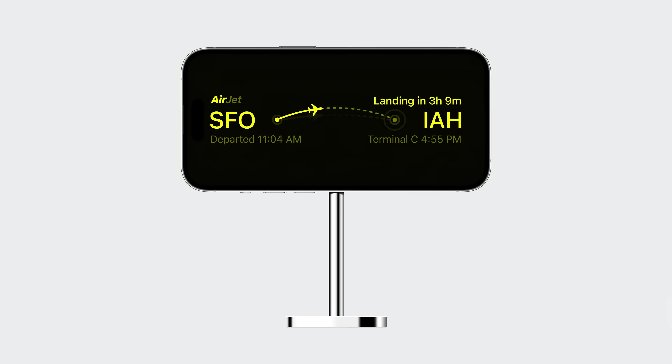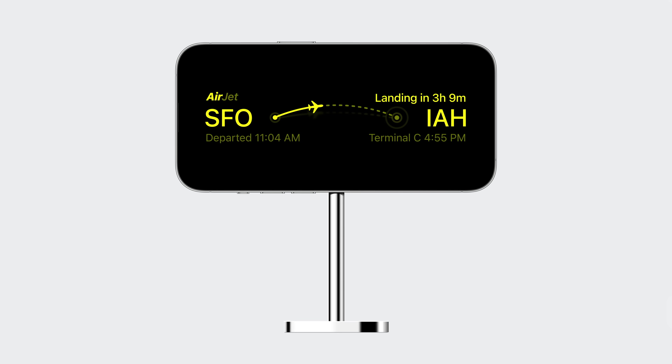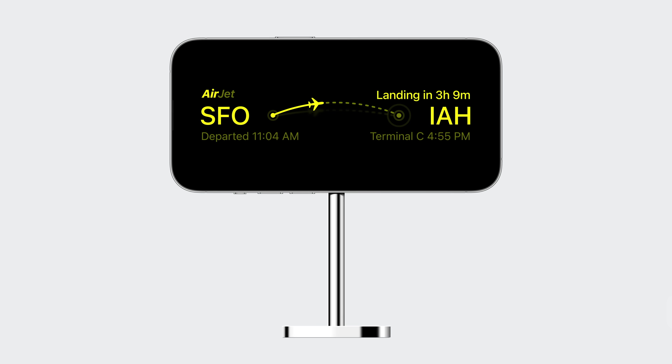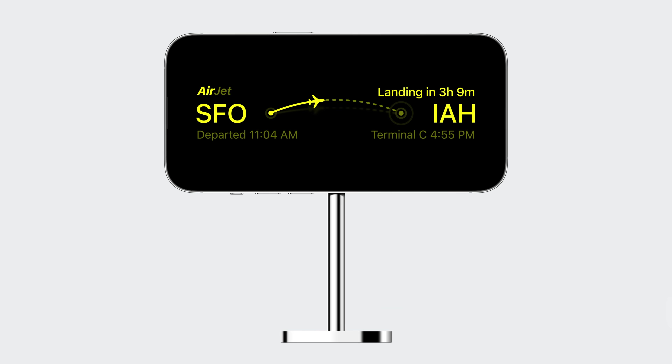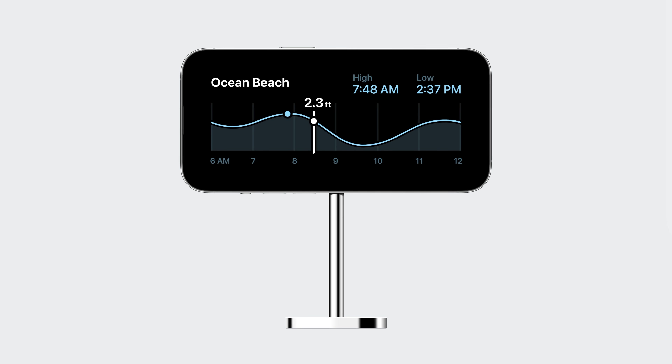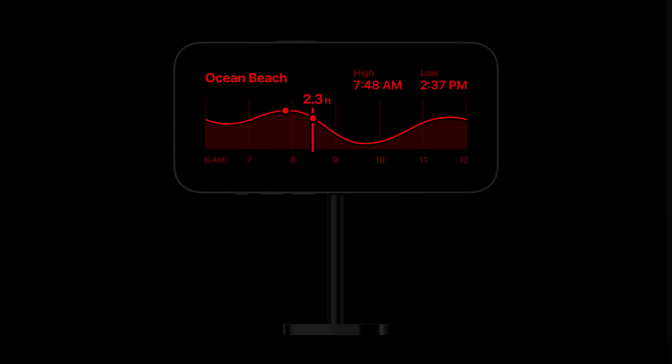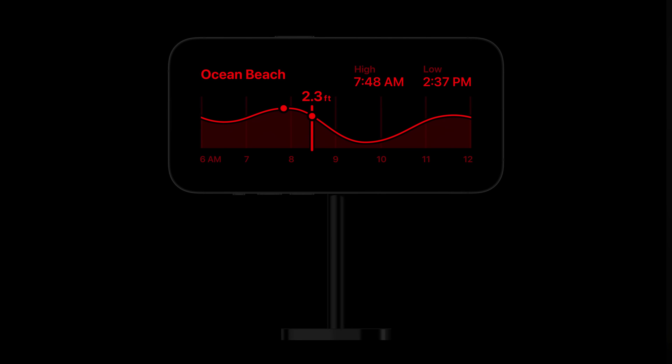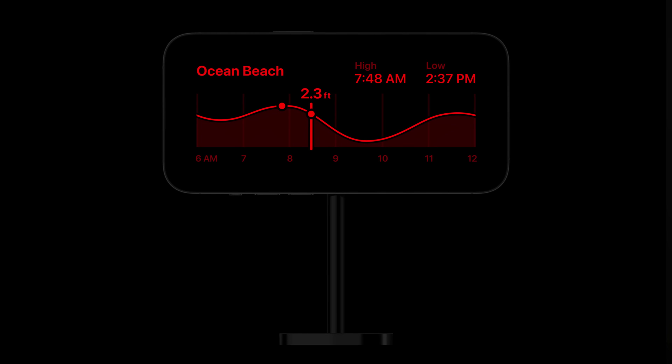Depending on the information your live activity is displaying, you might consider removing your background entirely when in standby and instead blend your layout seamlessly into the device bezel for a more softened, ambient look. An additional benefit is that it allows your layout to be displayed at a slightly larger scale since it no longer needs to account for the device sensor margins. Make sure all the assets and images you are using are high enough resolution to be displayed at this larger size. Standby also features an elegant night mode that transitions the display to a beautiful red tint in low light — your live activity receives this treatment automatically, but it's worth checking to make sure your colors have enough contrast when this mode is active.